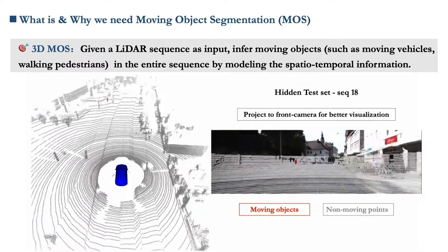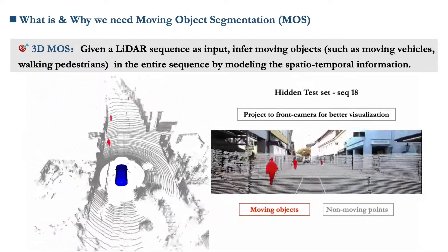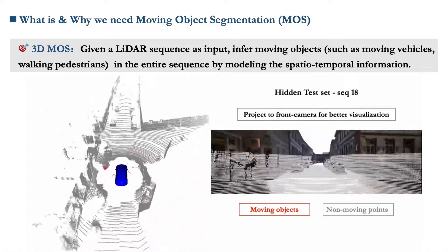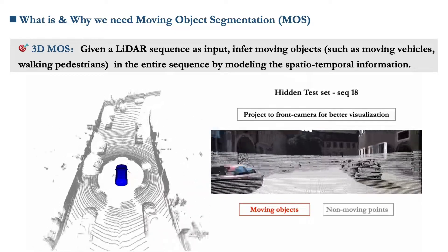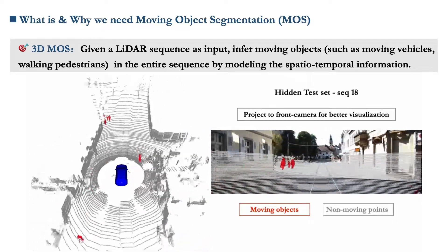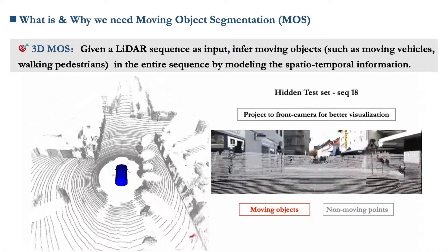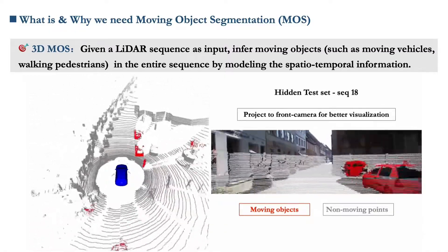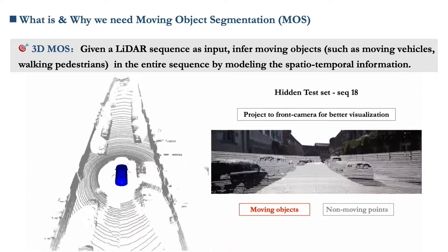Our work focuses on moving object segmentation in 3D LIDAR sequences in autonomous driving scenarios. Given a LIDAR sequence as input, we infer moving objects such as moving vehicles and walking pedestrians in the entire sequence. The ability to detect and segment moving objects is important for subtasks such as static map construction, motion forecasting, collision avoidance, and path planning.